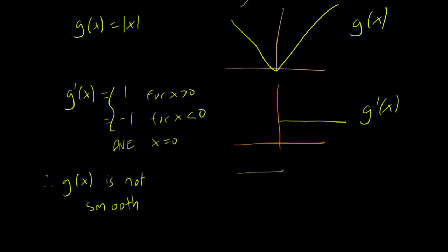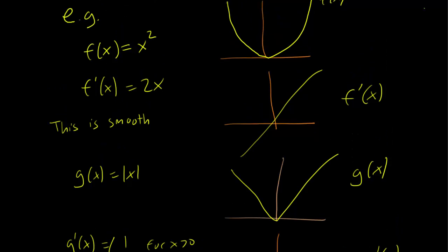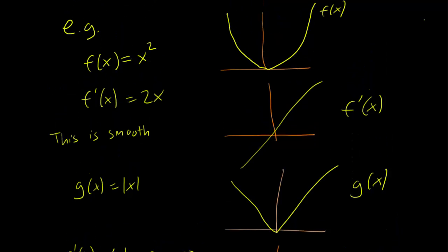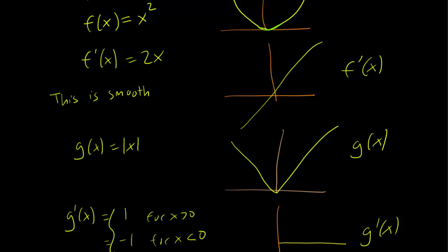And you can already see here the reasoning behind the terminology smooth. In smooth functions, the curves tend to be very gentle, whereas in continuous but non-smooth functions, you often see these really sharp turns, like you see in the absolute value of x.